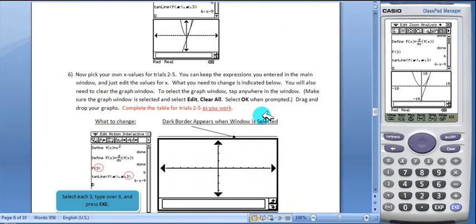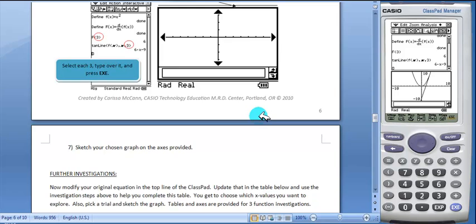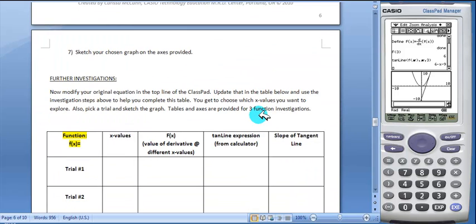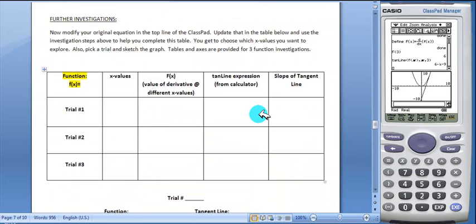Students will then modify the original defined equation to one of their choice, fill out the table, and sketch the graph of one of their trials. Students will be able to do this for three different functions of their choice.